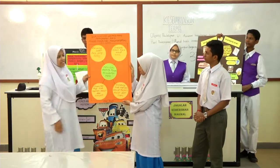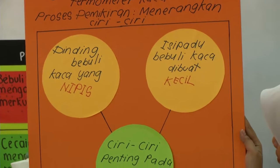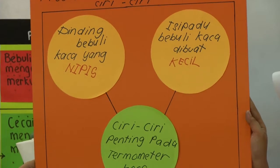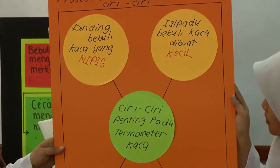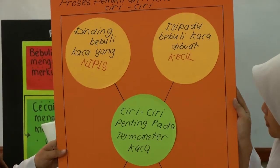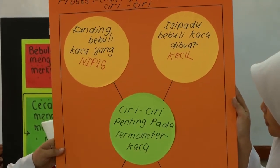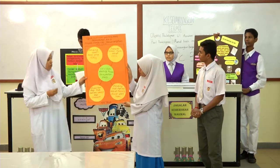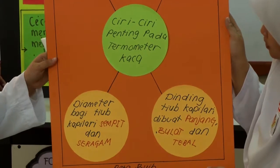Saya akan menerangkan tentang ciri-ciri penting pada termometer kaca. Yang pertama adalah dinding bebuli kaca yang nipis — ini adalah untuk haba yang dialir melalui pengaliran dan keseimbangan termal dapat dicapai dengan pantas. Yang kedua, isi padu bebuli kaca yang dibuat kecil supaya cecair akan bertindak balas dengan haba dengan lebih cepat. Yang ketiga adalah diameter tiub kapilari yang sempit dan seragam, untuk mempermudahkan pengembangan dan pengecutan Mercury.